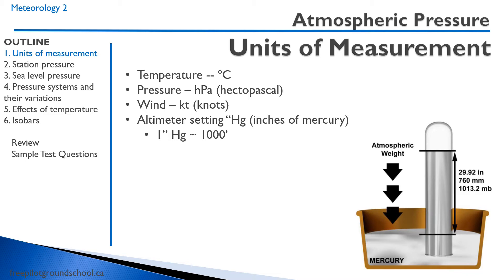Wind is described in knots. Altimeter setting is in inches of mercury. One inch of mercury is approximately a thousand feet.